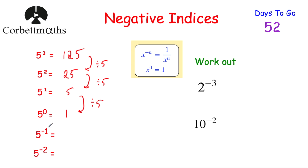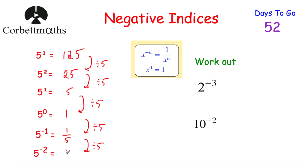Next, to find 5 to the power of negative 1, we divide by 5 again. 1 divided by 5 is 0.2, or as a fraction, 1 over 5. Then if we divide by 5 again, that gives us 5 to the power of negative 2. Take a fifth and divide by 5, you get 0.04, or 1 over 25. So 5 to the power of negative 2 is equal to 1 over 25.